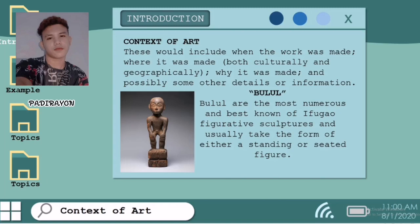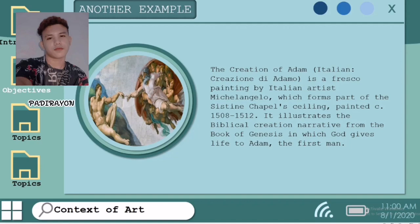Another example is the Creation of Adam. It is a detailed, incredible work that can be interpreted in many different ways. The image has a spiritual message that asserts God as creator of humanity, but the image could have an anatomical meaning as well. The Creation of Adam illustrates the biblical creation narrative from the book of Genesis in which God gives life to Adam.